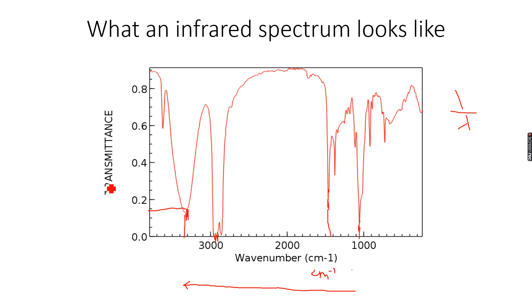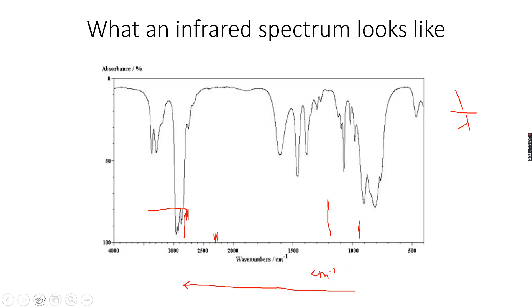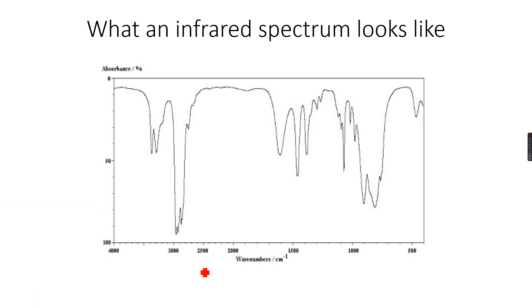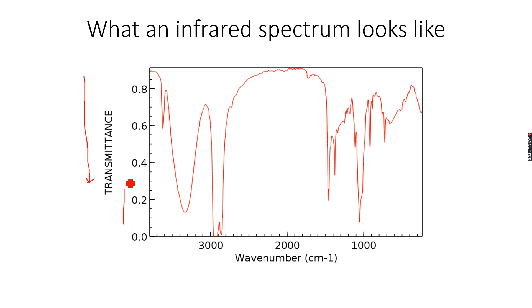There are two types of infrared spectra: one is transmittance against wave number, and the other is absorbance against wave number. The x-axis is the same — wave number — but on the y-axis, instead of transmittance we have absorbance. Since absorbance is the exact opposite of transmittance, down the scale absorbance is increasing, while up the scale transmittance was increasing.